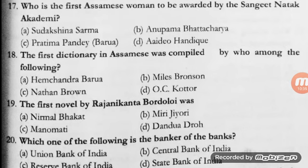Question number 17: who is the first Assamese woman to be awarded by the Sangeet Natak Academy? Options: Sudha Krishna Sharma, Anupama Bhattacharya, Prathima Pandey Barua, and Aidev Hendik. The correct option is Prathima Pandey Barua, who was awarded for her pioneering efforts in popularizing Goalpuriya Lokageet.